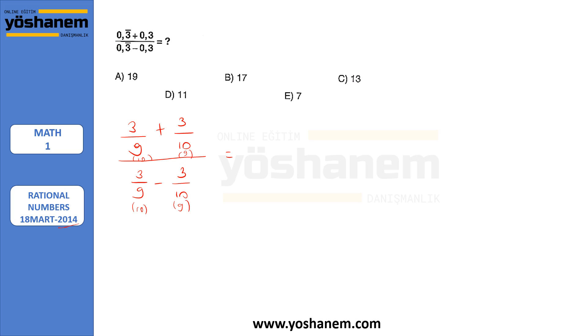So 3 times 10 is 30. Plus 3 times 9 is 27. 9 times 10 is 90. Divided by 30 minus 27 over 90. And this is 57 over 90. Divided by 3 over 90.